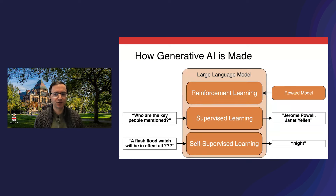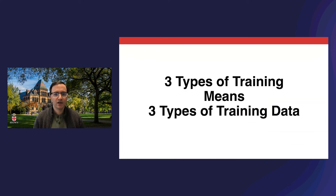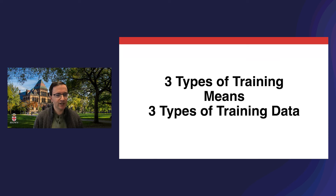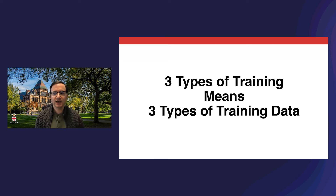With that, the training stack is complete. We have three different kinds of training that all go toward making LLMs as capable as they are. Having three types of training means we also have three types of training data. This introduces new opportunities and challenges in training data management. If our training data across the stages is in harmony, then good things happen — and if it's not, then bad things can happen. I'm going to illustrate that now with two vignettes on recent research from our lab at Brown.